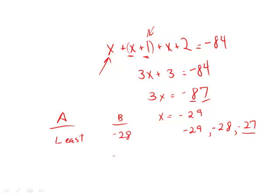It's not, because in the negative world, the greater the number is, the less it is. That is, negative 29 is less than negative 27. So the least possible number is negative 29. And so, therefore, the answer is B.